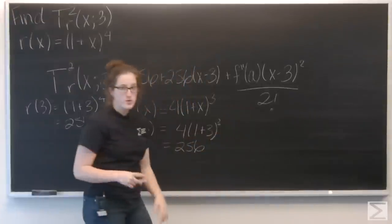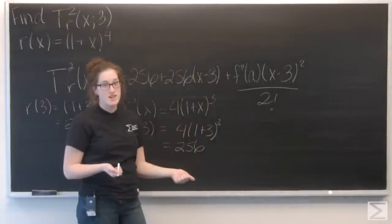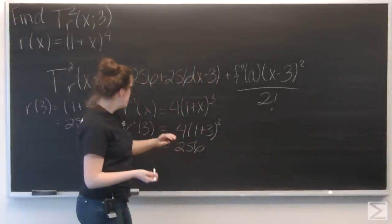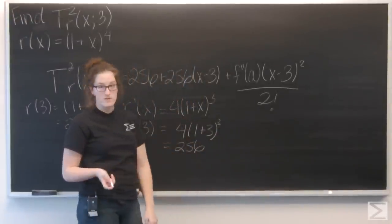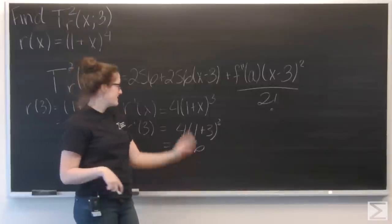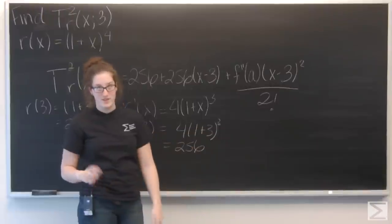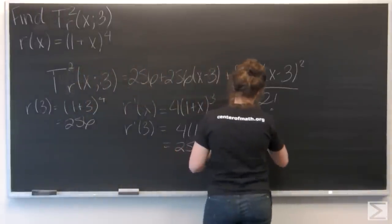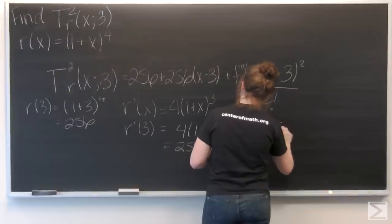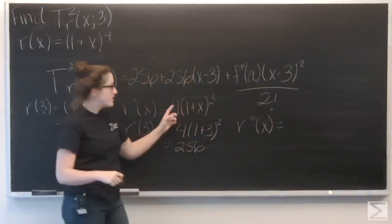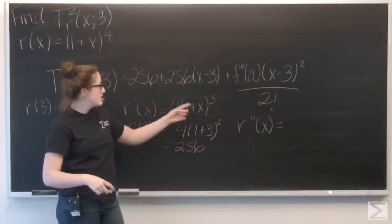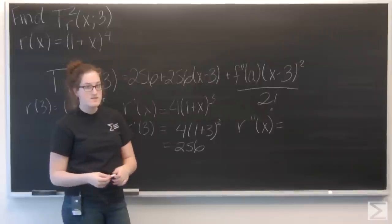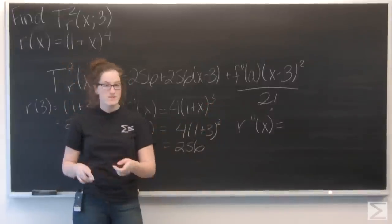Okay, so now I need to find the second derivative of r. So let's take the derivative of 4(1+x)³. So chain rule again, I'm going to multiply by the 3 to get 12(1+x), and then 3 minus 1 is going to be the second.